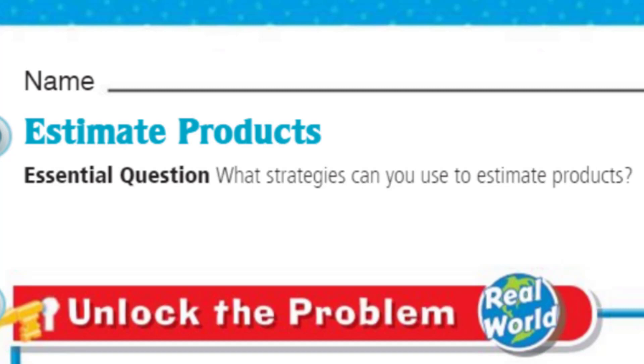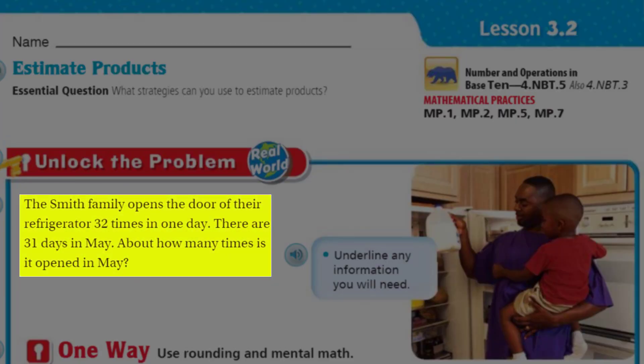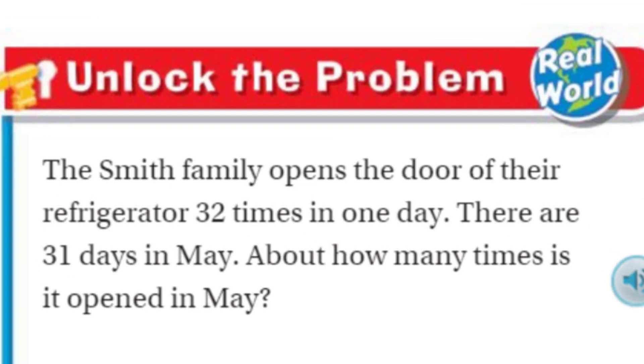First, you know what we got to do, right? Unlock the problem. That's right, my friends, because it's real world, baby. Real world. Now, it says the Smith family opens the door of their refrigerator 32 times in one day. Okay. That seems like a lot. Kind of a sketchy little problem. Now, a couple things that stand out. First of all, here, it says, Underline any information you will need.